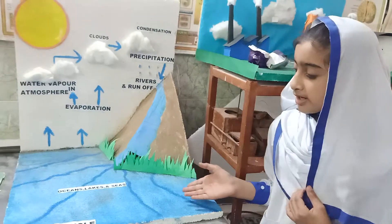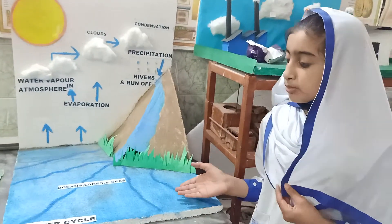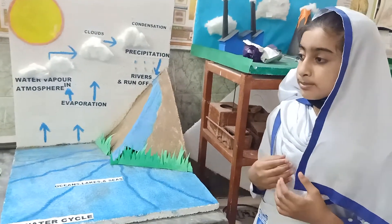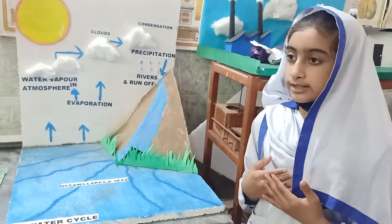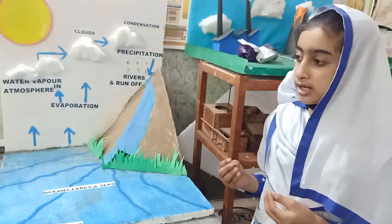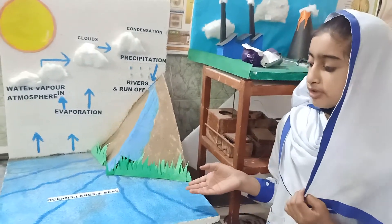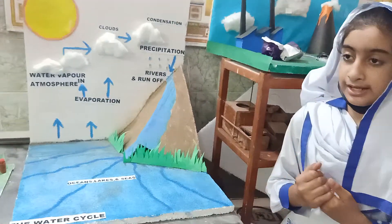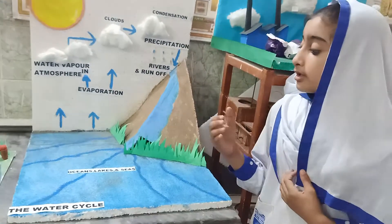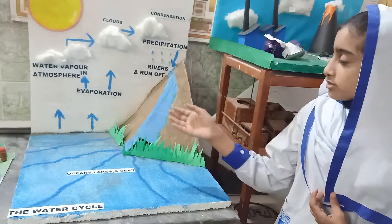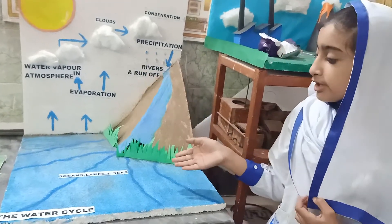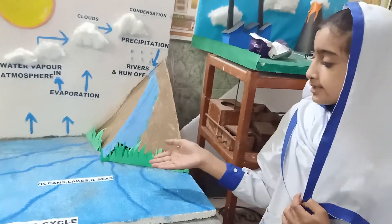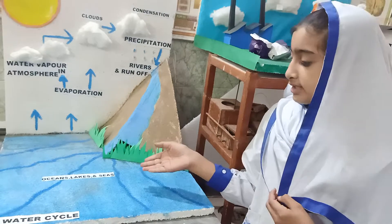The water cycle is very important for our environment, which we use in our daily lives such as drinking, washing, and other things. During the process of the water cycle, the sun causes water to evaporate from oceans, lakes, seas, and so on.